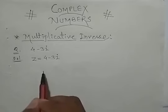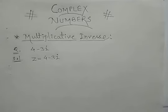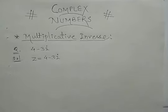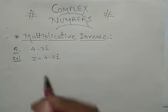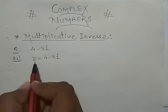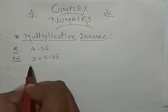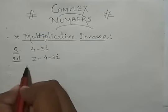If you have to get the multiplicative inverse, then the multiplicative inverse — you know, for any number like 3, the multiplicative inverse is 1 by 3; for 5 it is 1 upon 5; and for z it is 1 upon z.